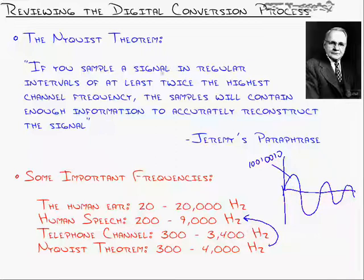So, going back to the Nyquist theorem, sampling at least twice the highest channel frequency means that if we're going up to 4,000 hertz, we need to sample, if this is one second, we need to sample 8,000 times every single second.